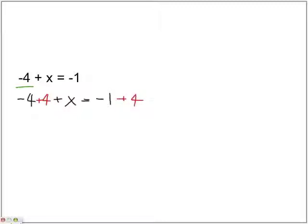This would cancel out the negative 4 on the side which the x is on. So by doing this, you are isolating x.